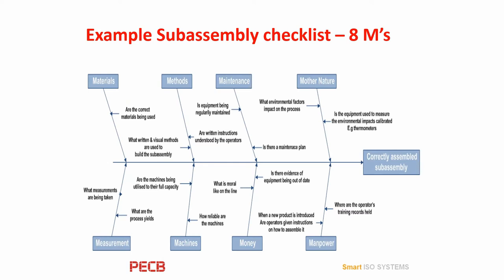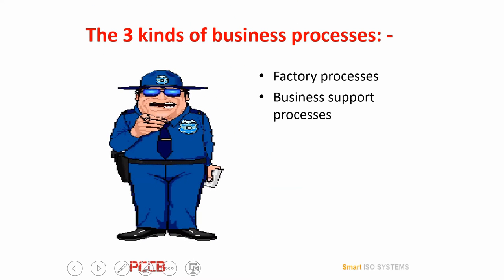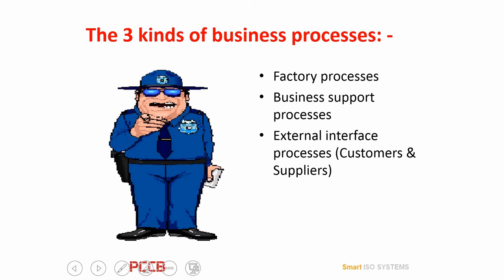This slide shows a cause and effect diagram using an electronic subassembly, showing how a checklist can be developed by taking the things that affect the process and asking questions to verify whether it's performing as it should be. The level shown has two questions per factor so the diagram does not become too cluttered. For example, under materials we can ask: are the correct materials being used? Under measurement, we could ask: what measurements are being taken, and what are the process yields? Under machines: are the machines being used to their full capacity and how reliable are they? There are three kinds of processes: a factory process, a business support process, and external interfaces with your suppliers and customers.